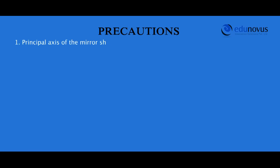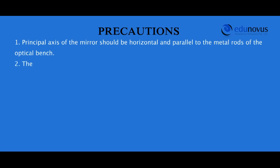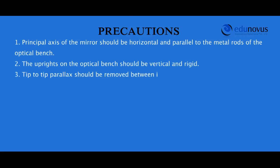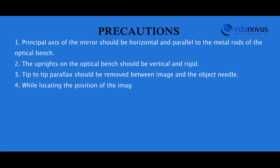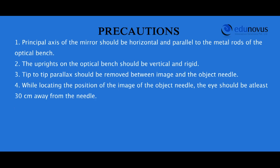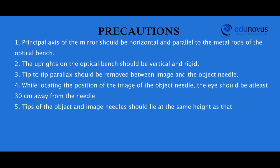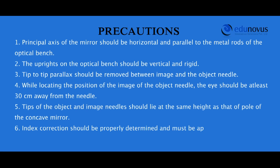Precautions: The principal axis of the mirror should be horizontal and parallel to the metal rods of the optical bench. The uprights should be vertical and rigid. Tip-to-tip parallax should be removed between the image and object needle. While locating image positions, the eye should be at least 30 cm away from the needle. Tips of the object and image needles should lie at the same height as the pole of the concave mirror. Index correction must be properly determined and applied for both u and v.